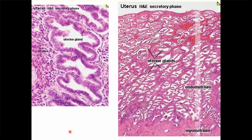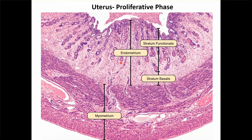Here we can see the secretory phase — the glands are all dilated showing a corkscrew appearance. In the proliferative phase the glands are not as dilated as in the secretory phase, and the spiral arteries just start growing but have not yet reached the superficial layer.